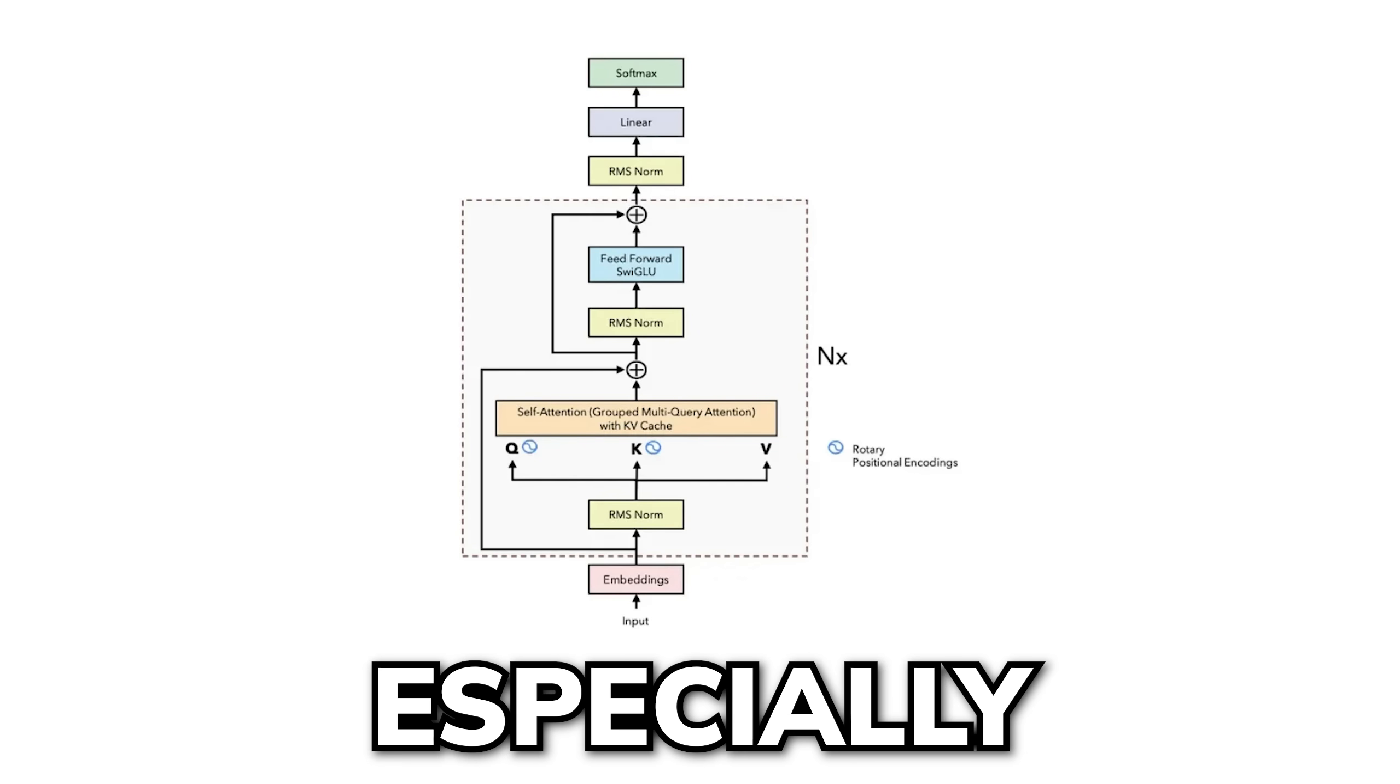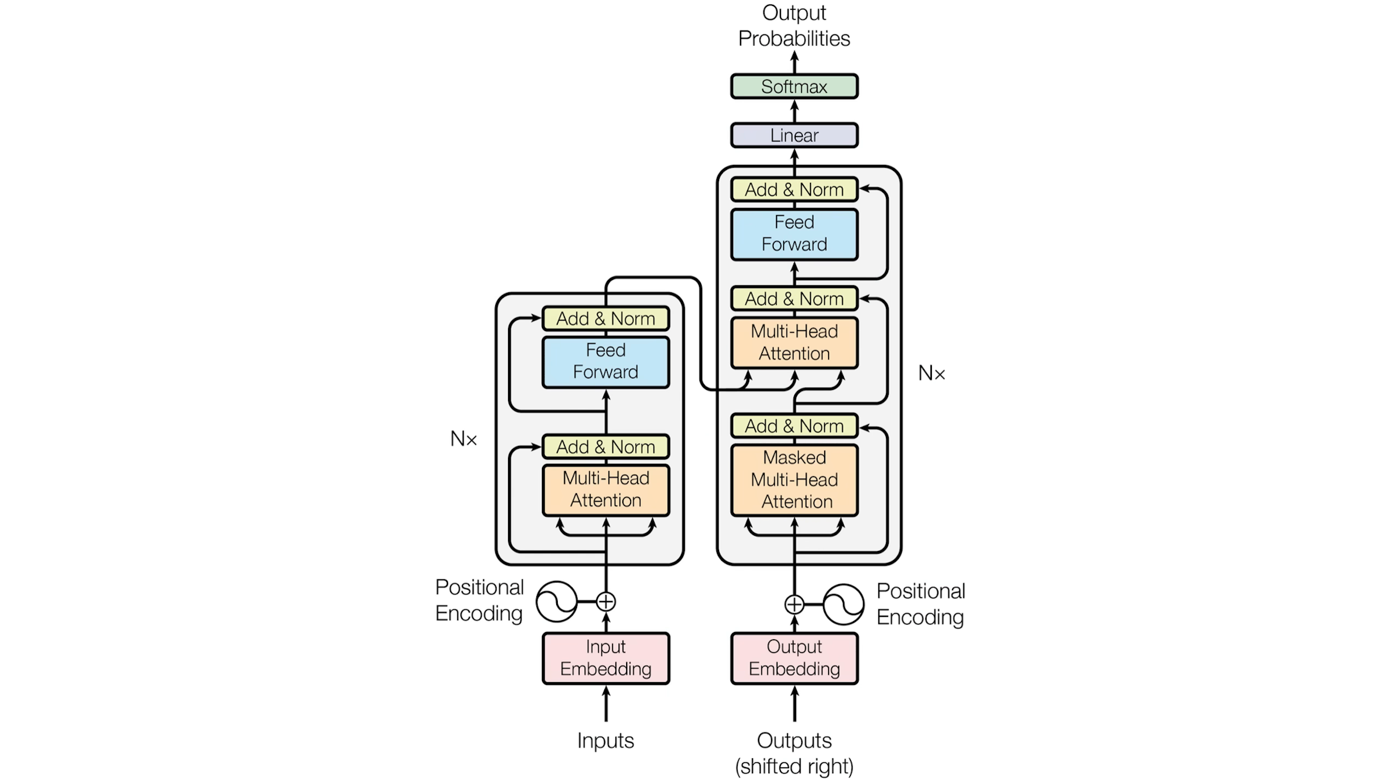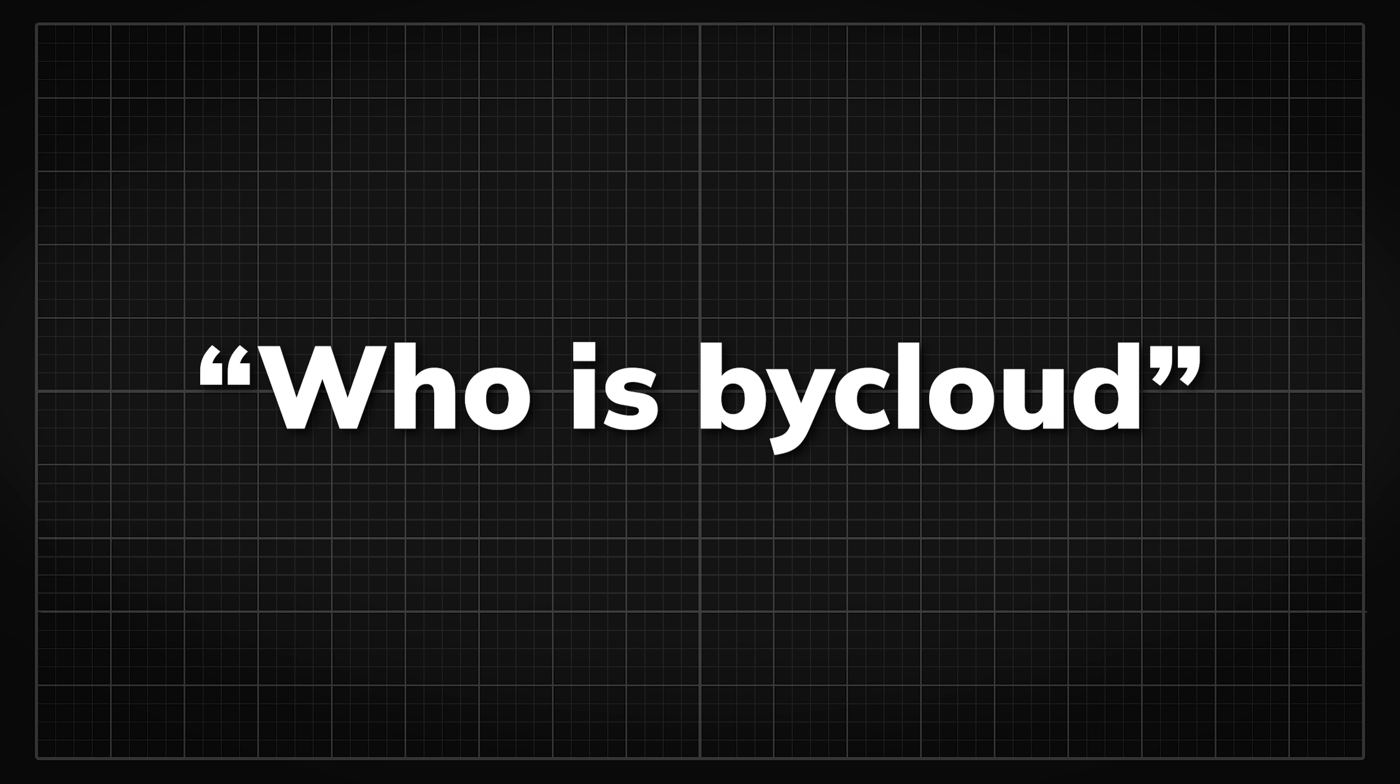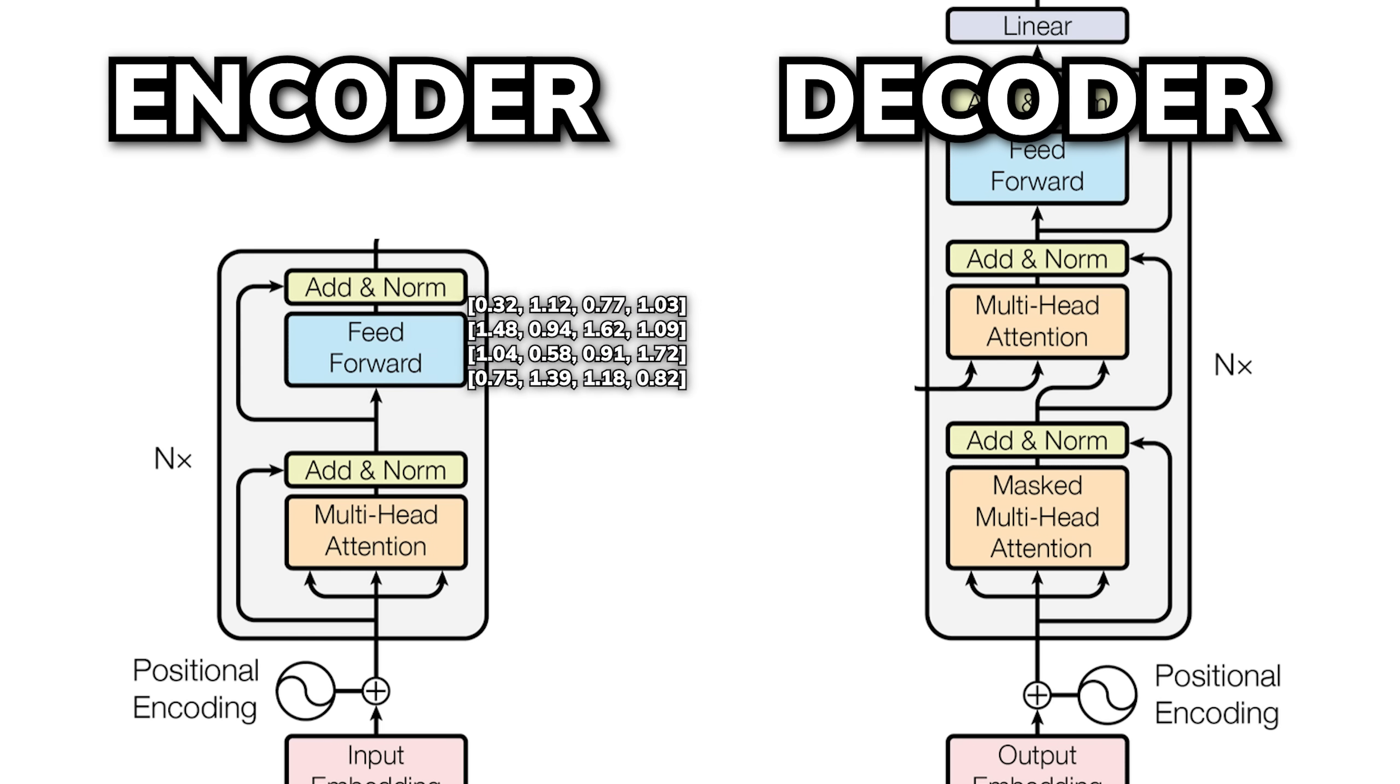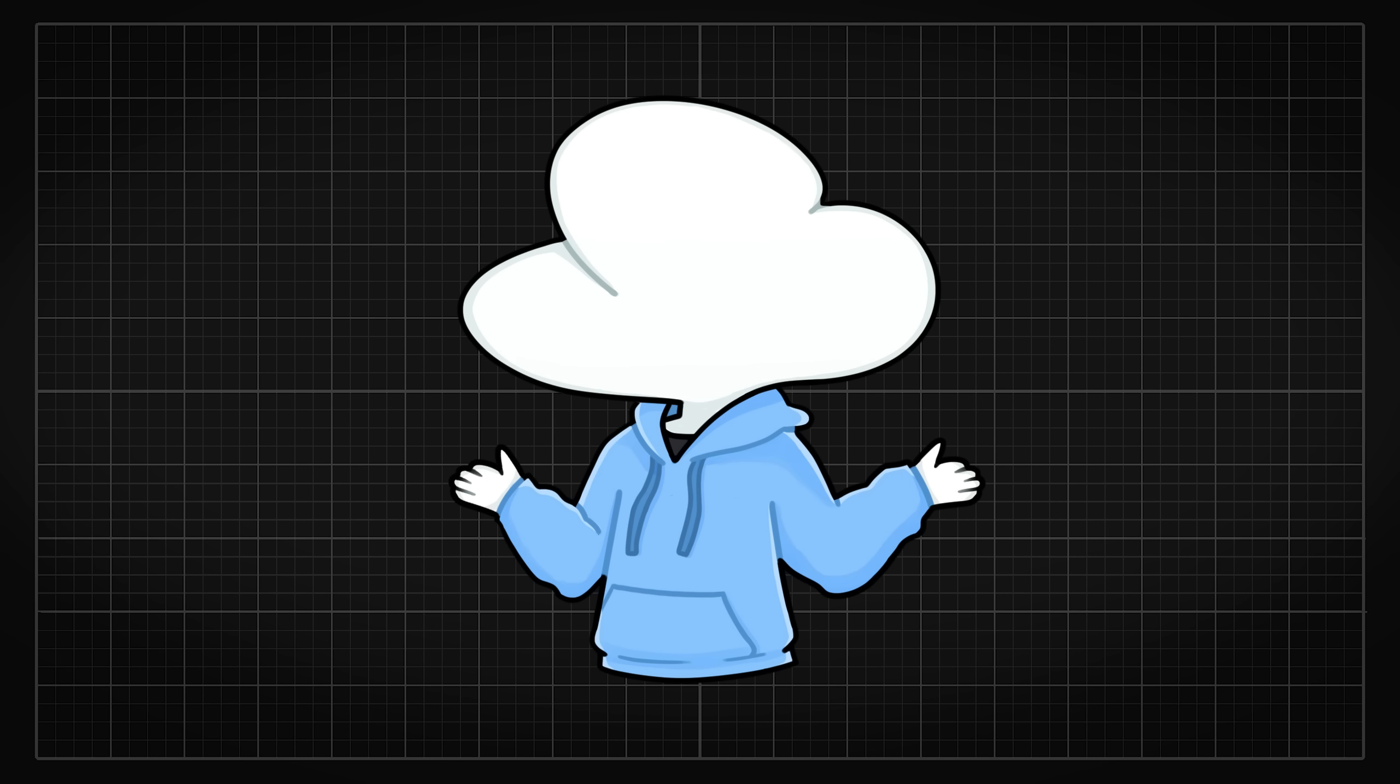But the Transformers we use today, especially in AI chatbots, work a bit differently. Instead of using both the encoder and decoder, chatbots mainly use just the decoder part. This is because for chatbots, rather than transforming existing content, it needs to generate responses based on a prior context. So it doesn't need the encoder to process the input text separately, which also makes the system simpler to use.